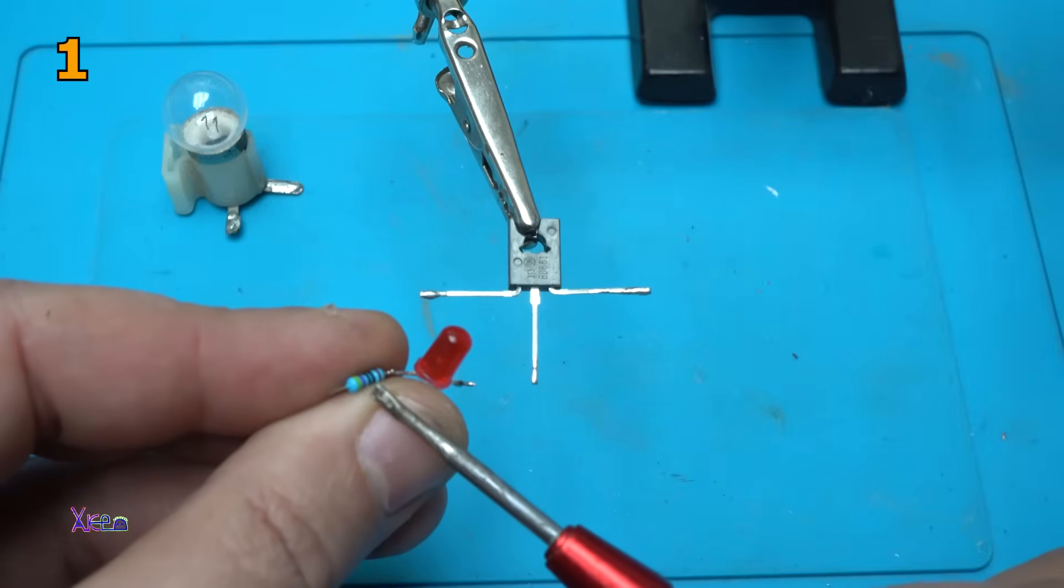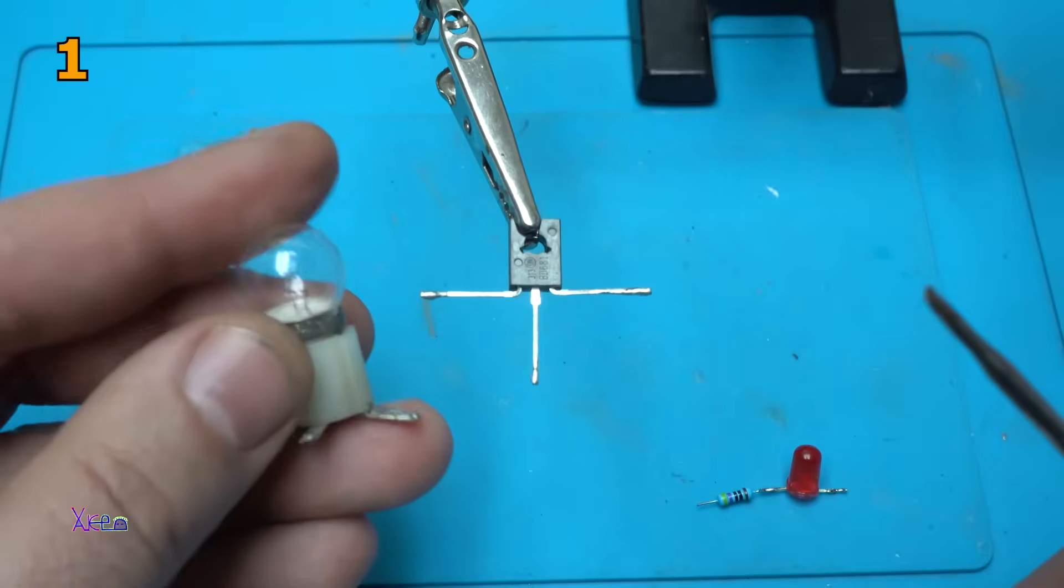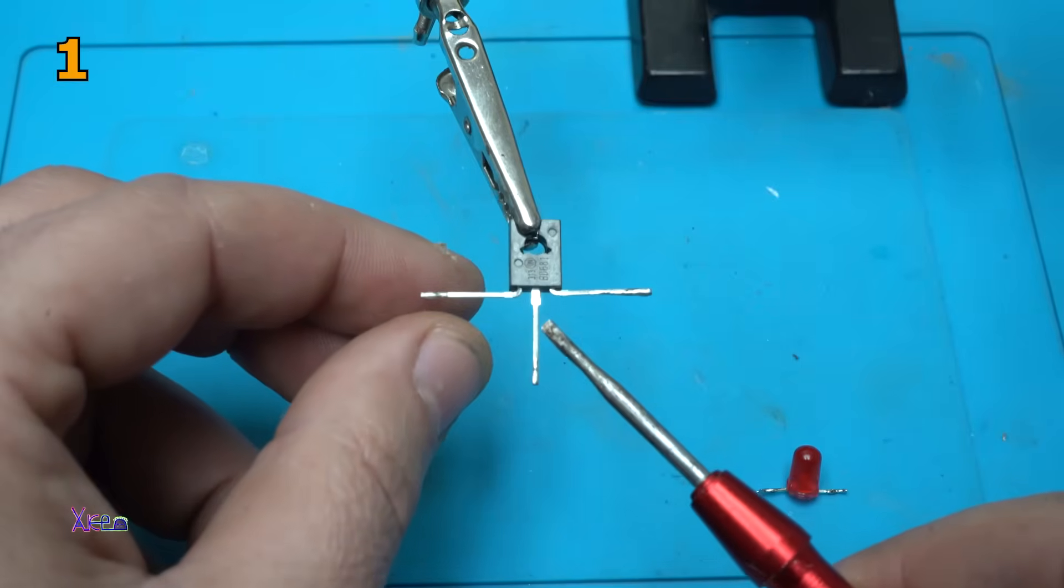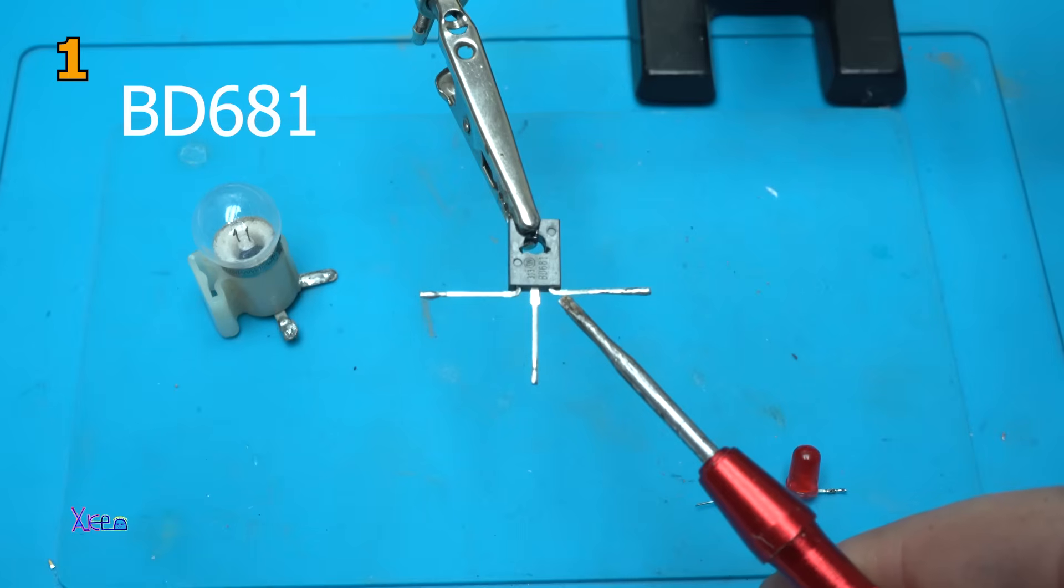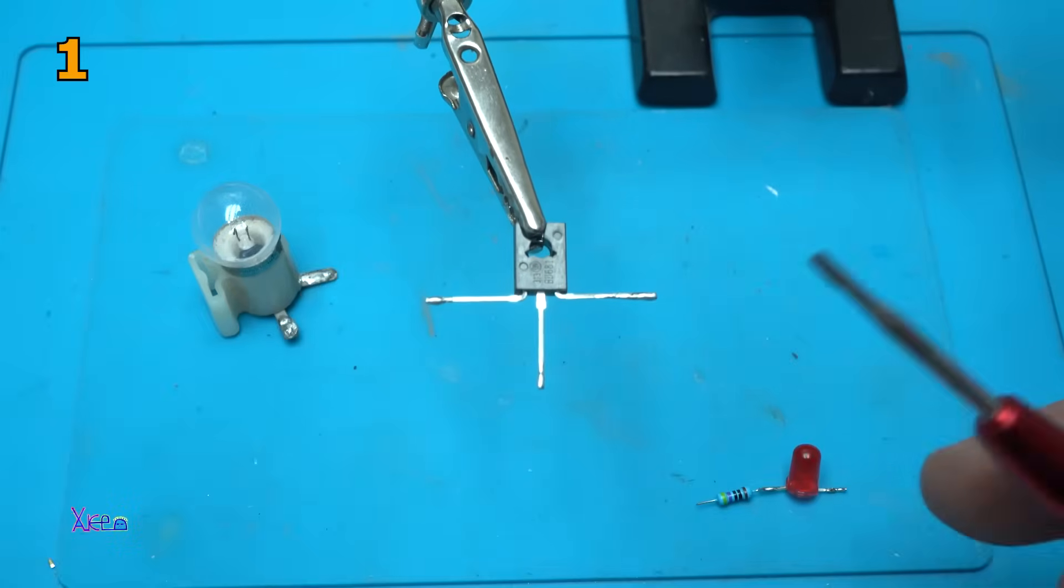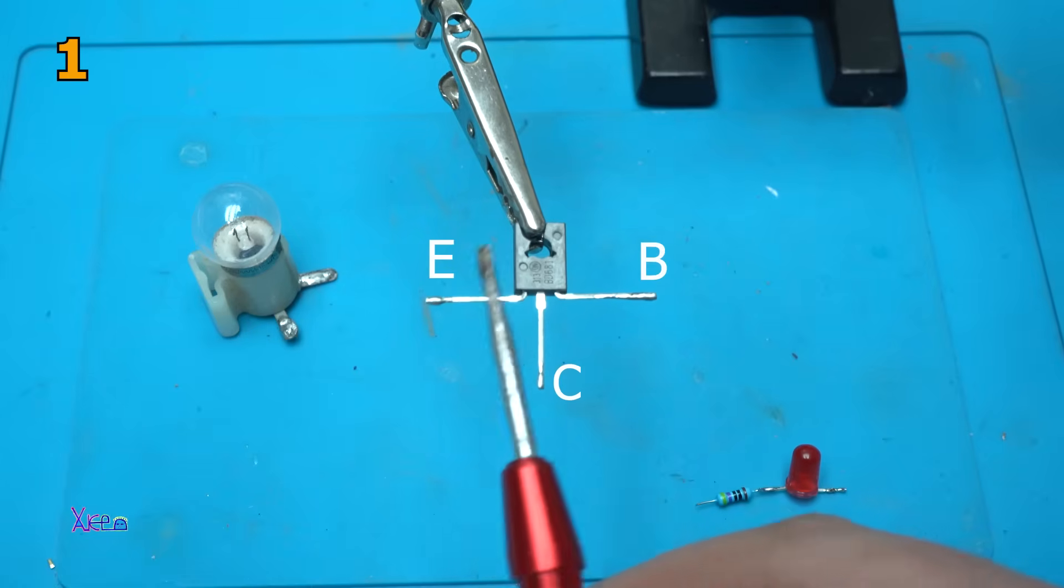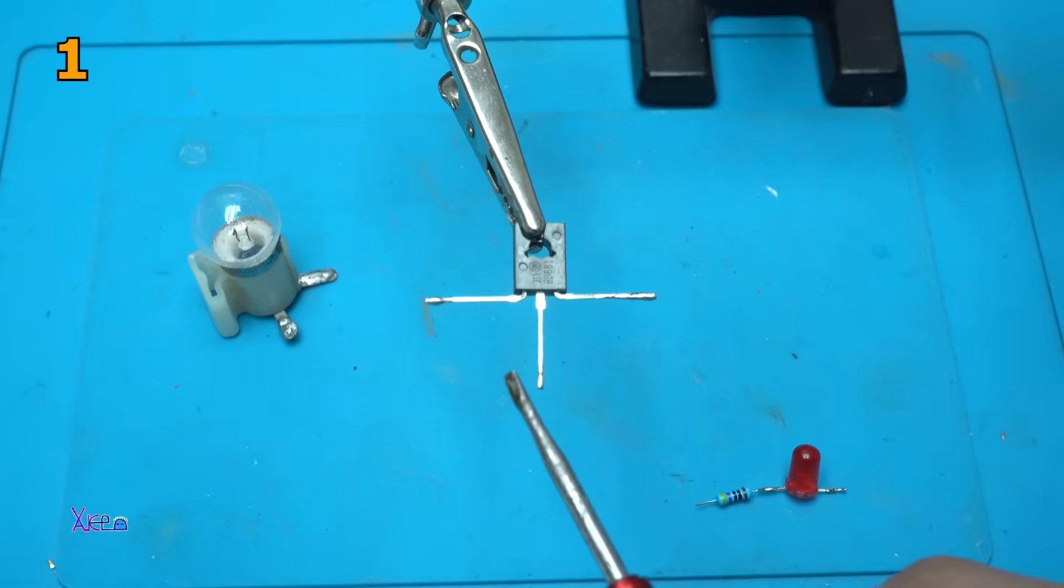For this project I'm using only a resistor of 470 ohms for the blinking LED, one small light bulb, and the transistor is BD681. It's a four ampere NPN Darlington transistor, and the first leg is emitter, collector, and base. Remember that. Let's build the circuit now.